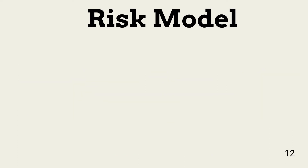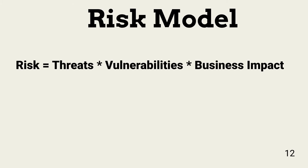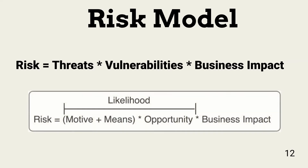Another way of looking at the elements of risk is by using a formulaic model. Risk equals threats times vulnerabilities times business impact. It shows that minimizing or eliminating any of the three factors significantly reduces risk. However, it does not show the entire picture. A more detailed model shows that the threat is divided into motive and means. Vulnerabilities are renamed opportunities — opportunities for a threat actor. The factor represented by the threat characteristics and opportunity is the likelihood of occurrence.